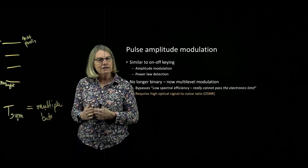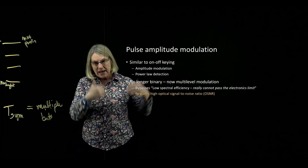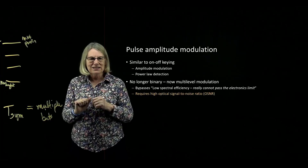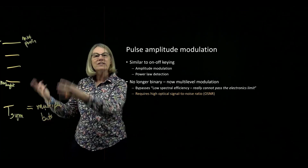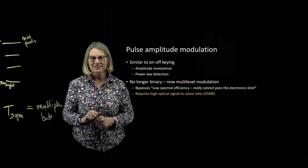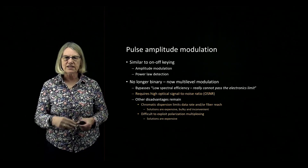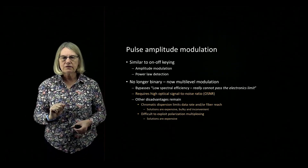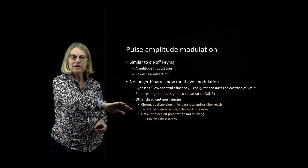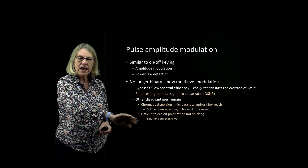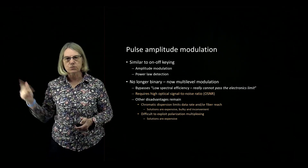It is possible to get by the spectral efficiency limitation even with IMDD using PAM. However, pulse amplitude modulation requires much more signal-to-noise ratio for the same increase in spectral efficiency compared to coherent detection. PAM also retains the other disadvantages: it's still limited by chromatic dispersion — even more so than binary — and it's just as difficult to exploit polarization multiplexing.